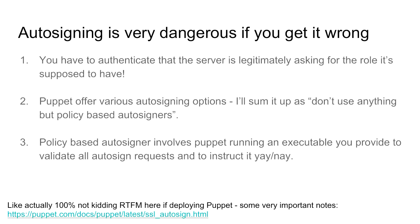Auto signing is really dangerous if done wrong, but there are ways to do it properly. The key requirement is you have to authenticate that the server is legitimately asking for the role it is supposed to have — is it actually a web server, and the right kind? Puppet offers a whole bunch of models for this, though my complaint is they give you many ways to hang yourself rather than just offering a secure model. The link at the bottom of the slide covers this — read everything on that page.